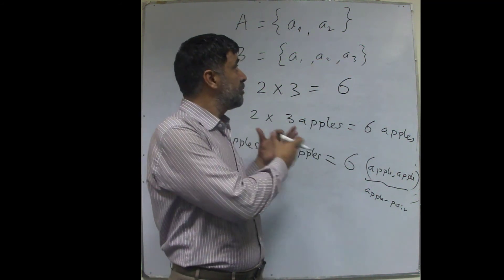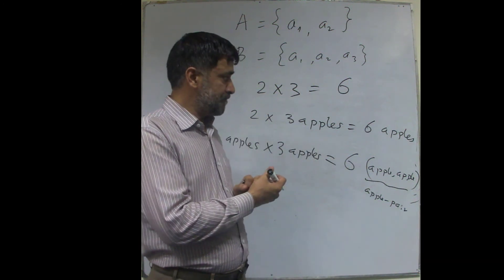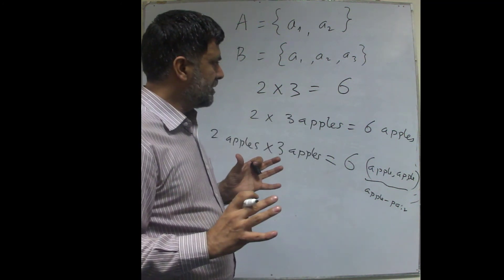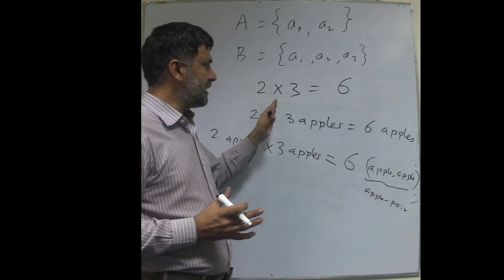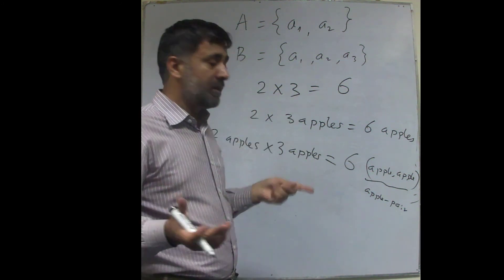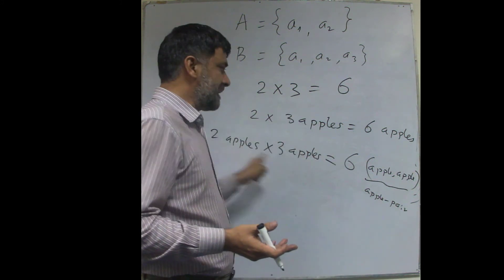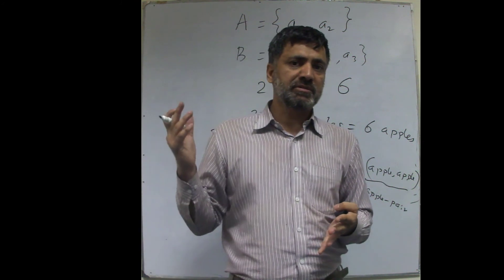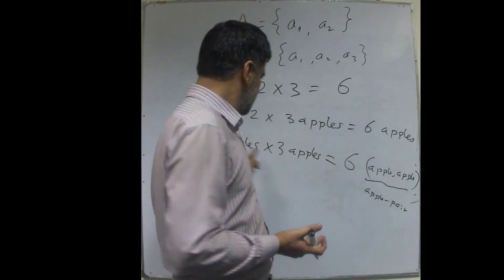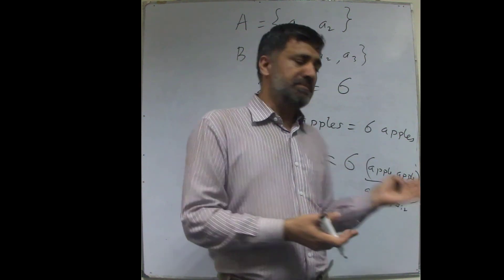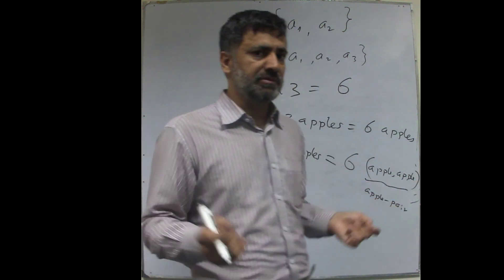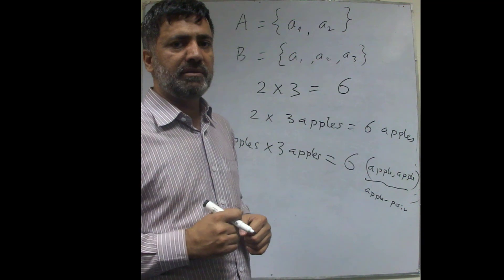Next time we will take this idea further and introduce division involving denominations or units. You can easily extend these ideas to negative numbers: two apples times three apples is six apple pairs; two apples times minus three is minus six; and minus two apples times minus three apples is plus six apple pairs. The sign rules from the previous video apply directly. See you in the next video.